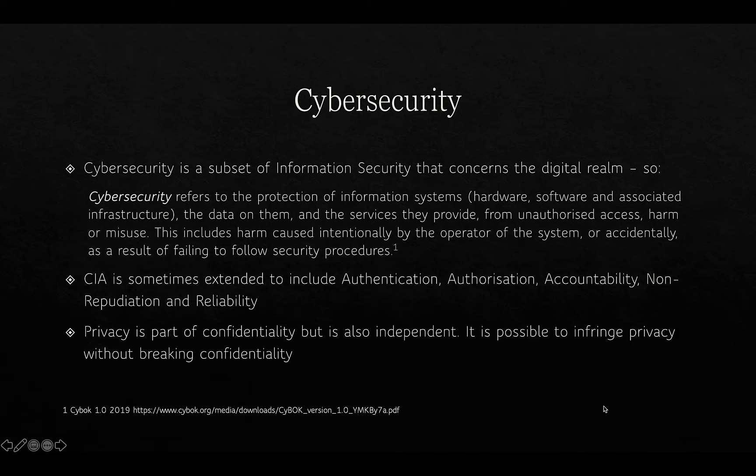The CIA triad is also sometimes extended to include authentication, authorisation, accountability, non-repudiation, and reliability. One important thing to note is that privacy is a part of confidentiality, but it's not interchangeable — it is possible to infringe privacy without breaking confidentiality. Privacy relates to information about a person that they may or may not want to share, and there are different levels of sensitivity that privacy legislation and data protection regulations concern themselves with.